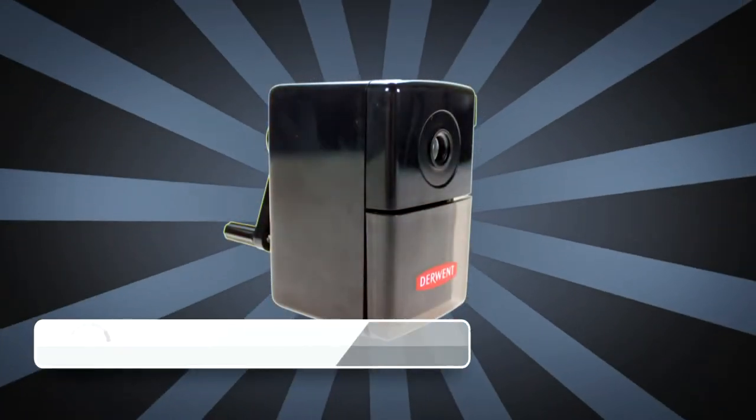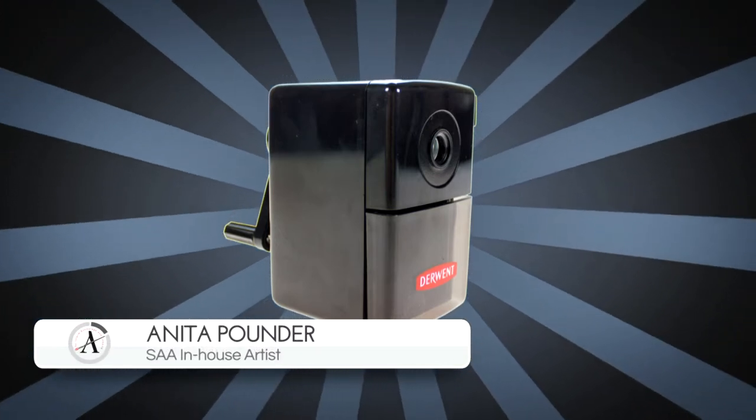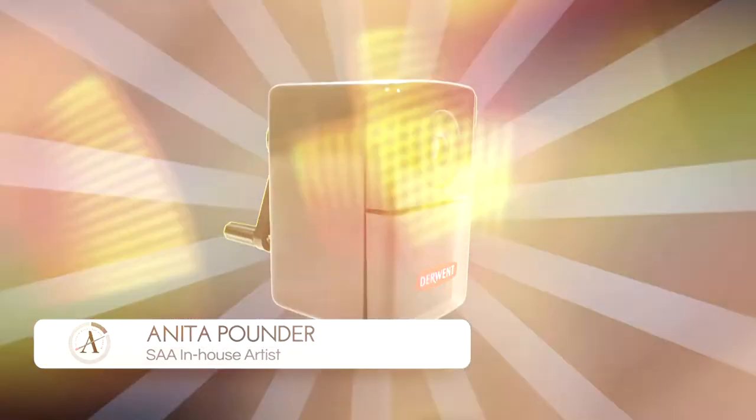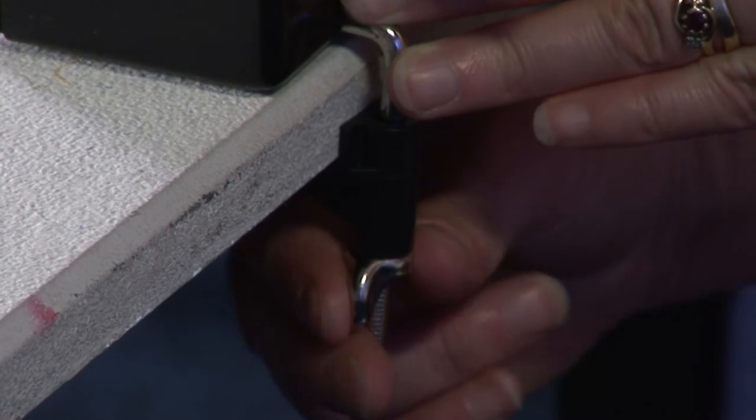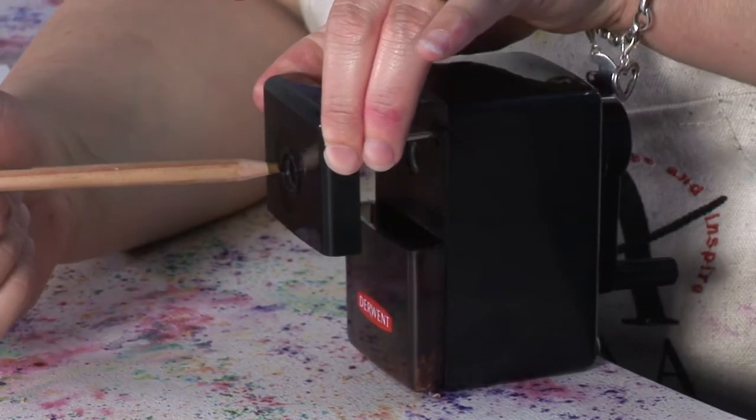Let's have a look at some tips on caring for and maintaining your Derwent Superpoint Mini Manual Sharpener. It works much better if it's clamped to a desk, so it doesn't wriggle around.